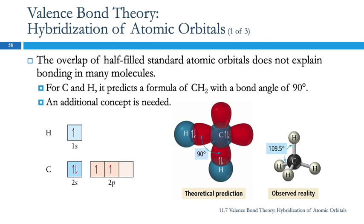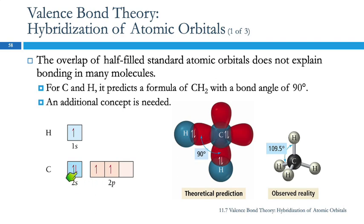Let's look at carbon and hydrogen. If we look at the orbital diagram for the valence electrons on carbon, we see that carbon has two half-filled orbitals — these p orbitals. The s orbital is full, so that's not going to interact with anything. And then there's an empty orbital.